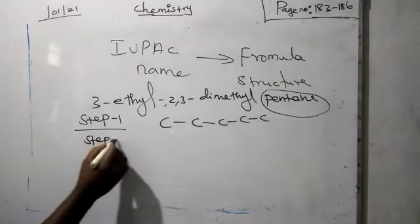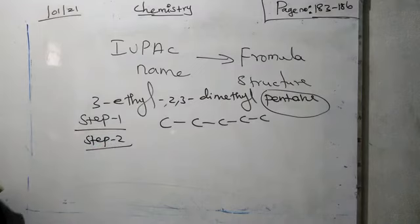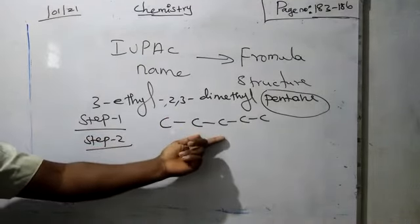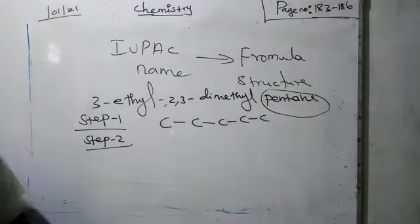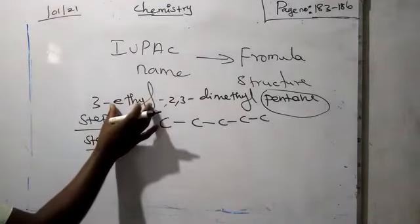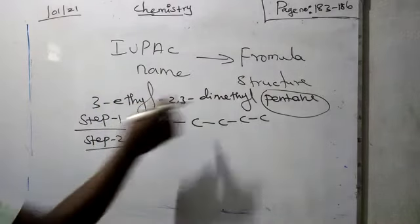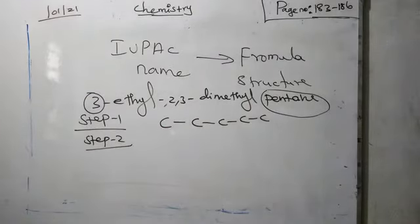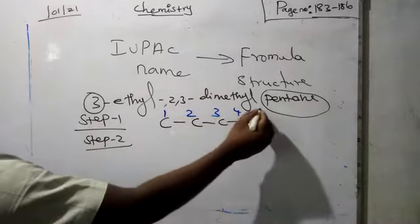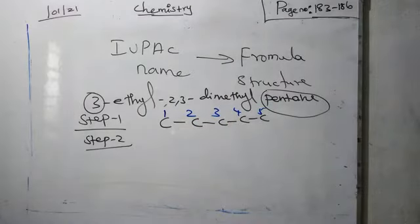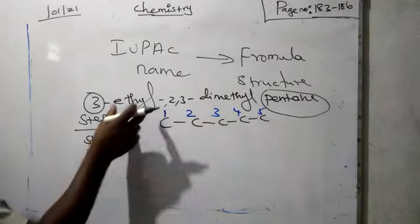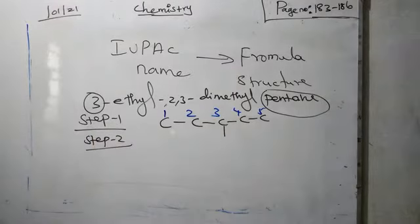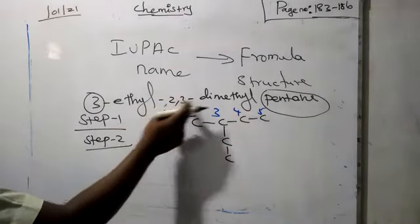Step 2: we have to write the complete skeleton by applying all the branches. The branches are ethyl and dimethyl — that is 3 branches total. We can number the carbons from either side: 1, 2, 3, 4, 5. At the third carbon, we have an ethyl group. Ethyl means 2 carbons are present. Then at the second carbon and third carbon, we have a methyl group — that's why it is called dimethyl.